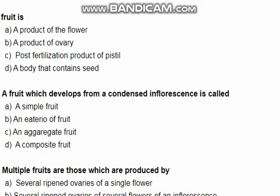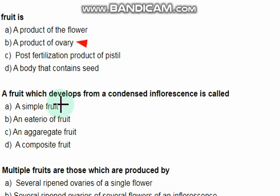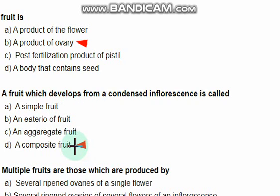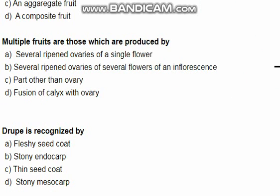A fruit is a product of — a product of ovary, this is the right one. A fruit which develops from a condensed inflorescence is called — the right option is composite fruit.